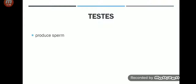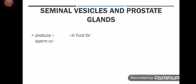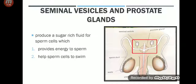Testis: their function is to produce sperm. Testis are also known as testicles and gonads. Sperm cells are male reproductive cells. Then we have seminal vesicles and prostate glands — they produce a sugar-rich fluid for sperm cells, which provides energy and helps sperm cells in swimming. In this picture, prostate glands are shown in pink and seminal vesicles in white.